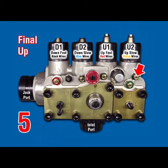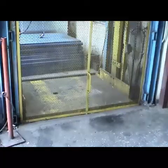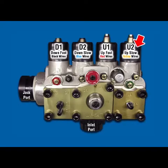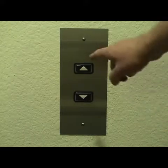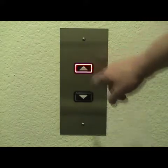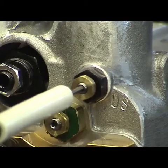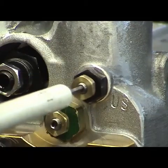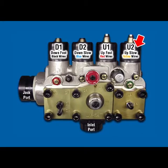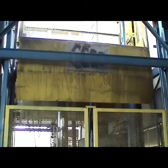US — Up Stop. The following procedure helps in cutting through the ineffective zone of the up stop adjuster, therefore expediting the final setting of US. Car at lower floor with no load. Disconnect U2. Register an up call — car should not move. Turn US clockwise until car moves, then counterclockwise until car stops again.